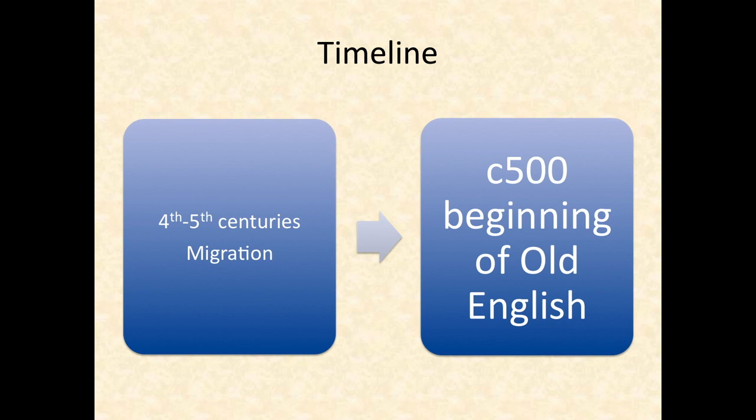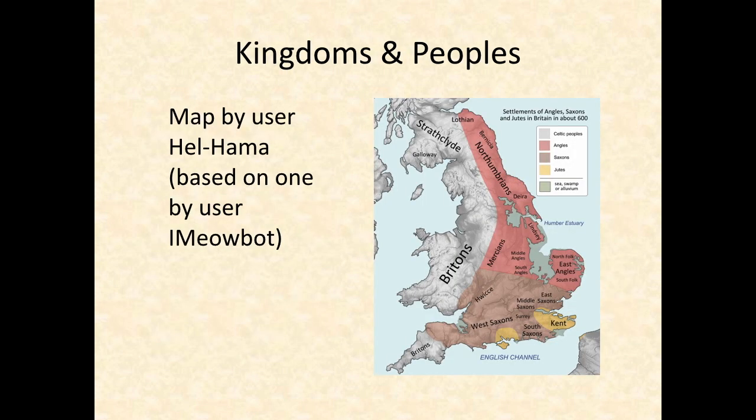The English did not develop a unified kingdom at once, but had several kingdoms, and there were tribes living between some kingdoms. Bede describes seven major kingdoms: Northumbria, which includes Bernicia and Deira, Mercia, East Anglia, Essex, Kent, Sussex, and Wessex. Different kingdoms had different degrees of power and different kings and sub-kings at various times.